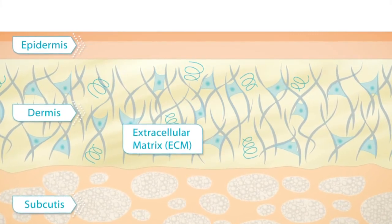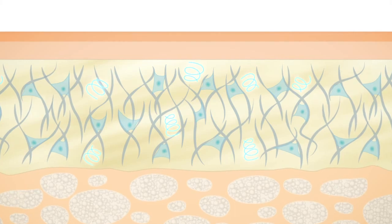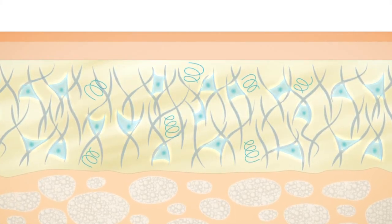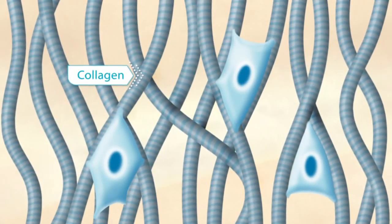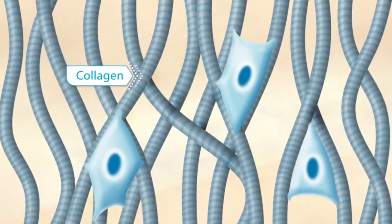The ECM is a complex scaffold composed of proteins and fibers, mainly produced by fibroblasts. Its most abundant component is collagen, a protein that ensures the structural integrity of the skin.